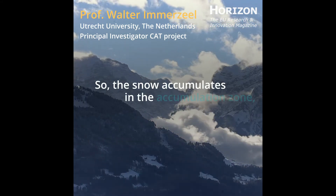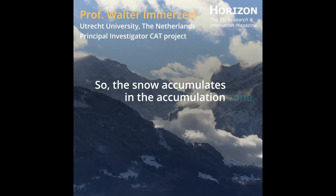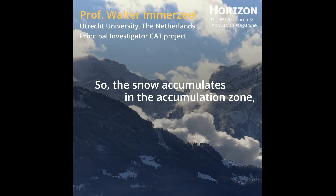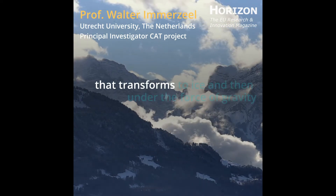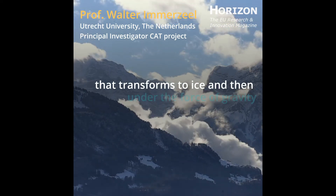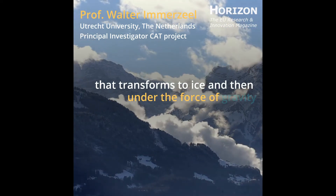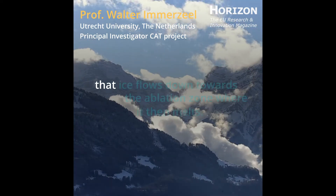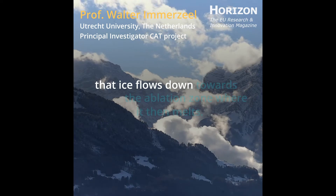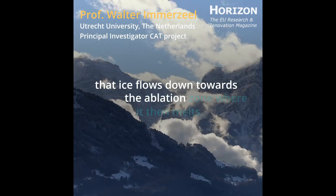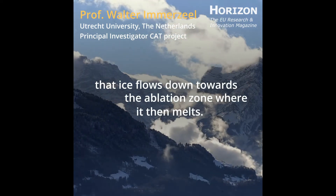Snow accumulates in the accumulation zone, transforms to ice, and then under the force of gravity that ice flows down towards the ablation zone where it then melts.